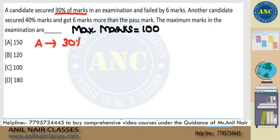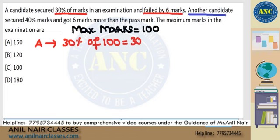Suppose I am the first candidate A. I got 30% of marks. Marks is 100, so 30% of 100 is 30 marks. And I failed by 6 marks — we'll keep that in mind.